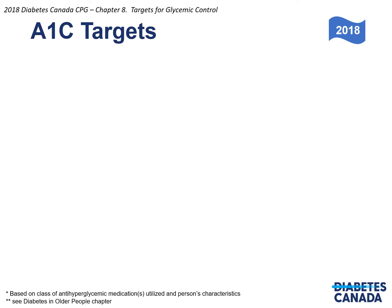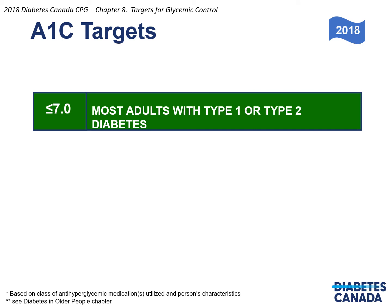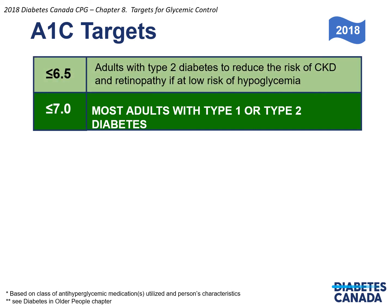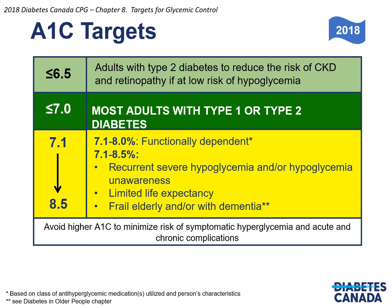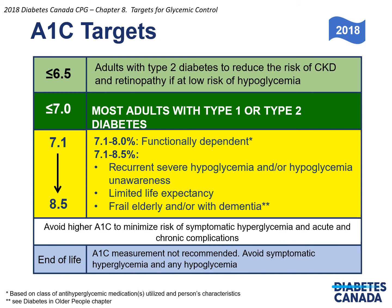The A1c targets we are currently using are as follows: less than 7% for most adults with type 1 or type 2 diabetes; less than 6.5% for adults with type 2 diabetes to reduce the risk of CKD and retinopathy if at low risk of hypoglycemia; 7.1 to 8% for functionally dependent individuals with impairment of more than one instrumental activity of daily living; 7.1 to 8.5% for patients with recurrent severe hypoglycemia and/or hypoglycemic unawareness, limited life expectancy, frail elderly, and/or those with significant dementia. We should avoid higher A1c's to minimize the risk of symptomatic hyperglycemia and acute and chronic complications. At the end of life, A1c measurements are not recommended — we should avoid symptomatic hyperglycemia and any hypoglycemia.